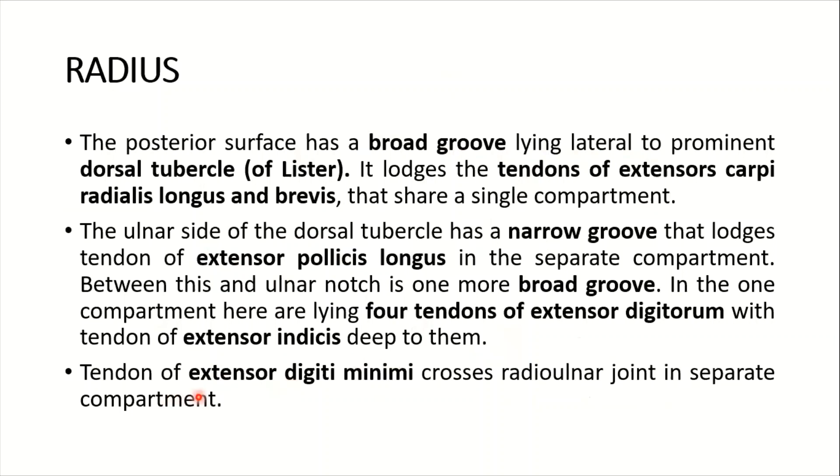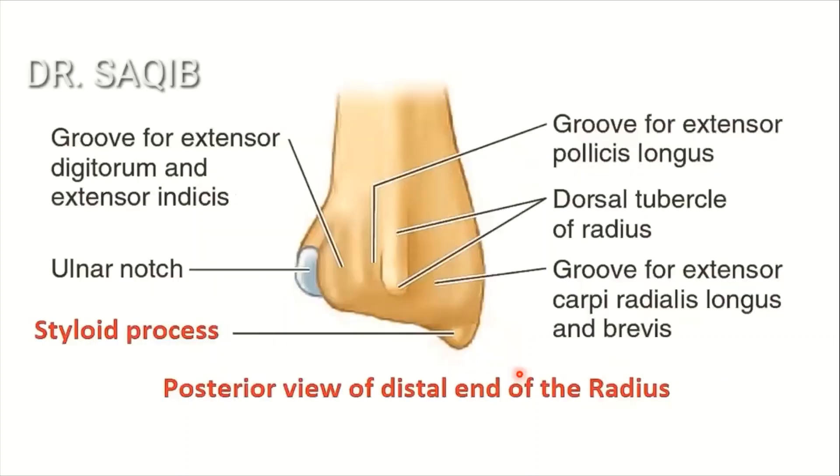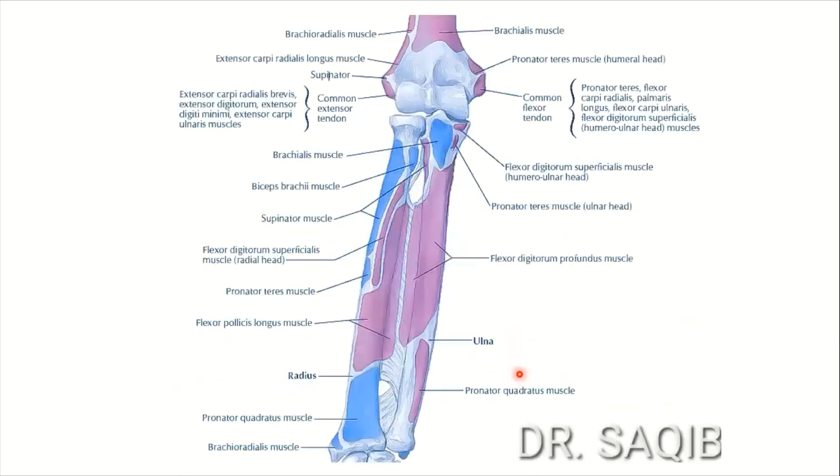The tendon of extensor digiti minimi crosses the radial joint in a separate compartment.